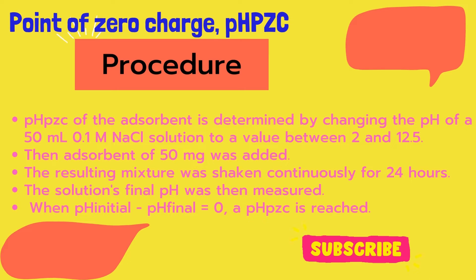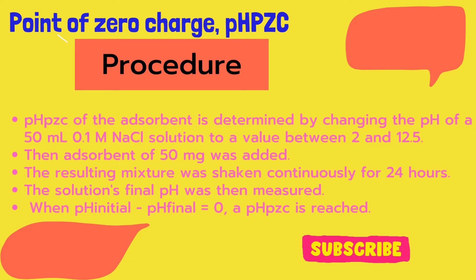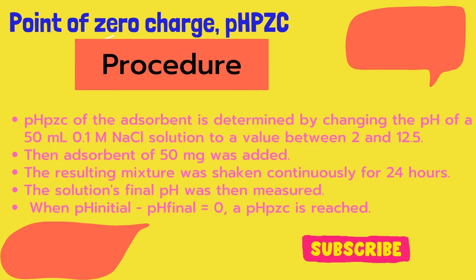When pH initial minus pH final equals zero, the point of zero charge is established.